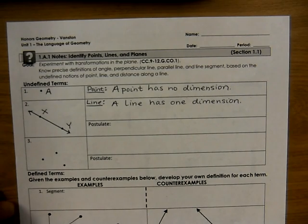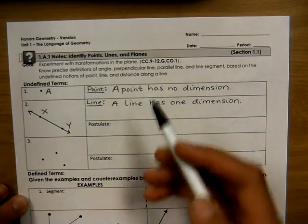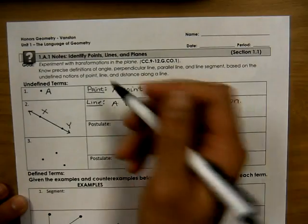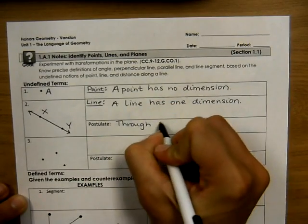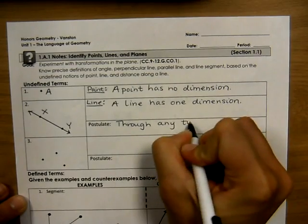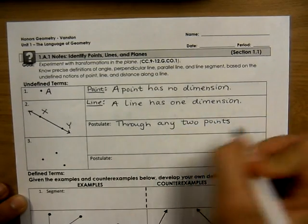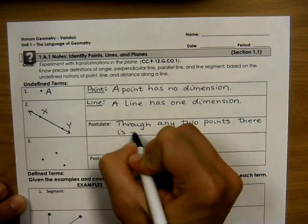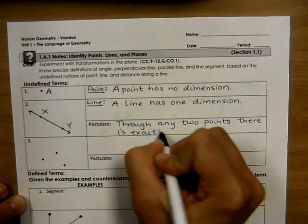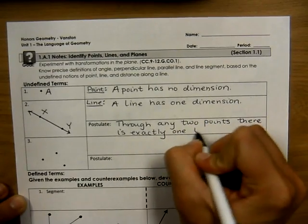There's a postulate that we can write, and that is through any two points, there is exactly one line.